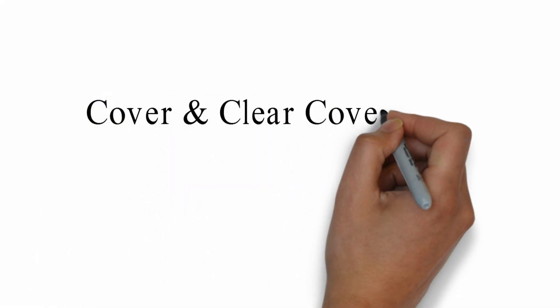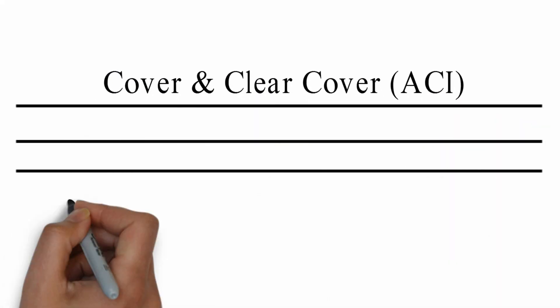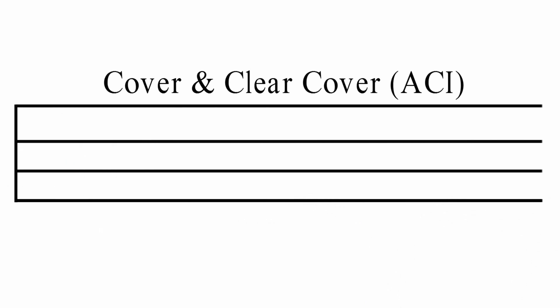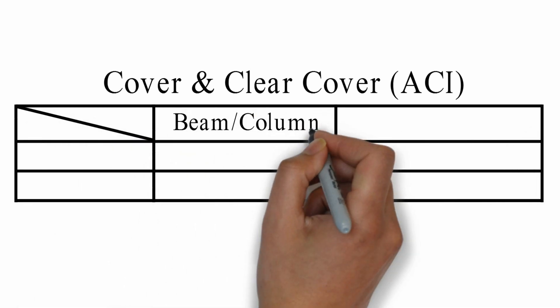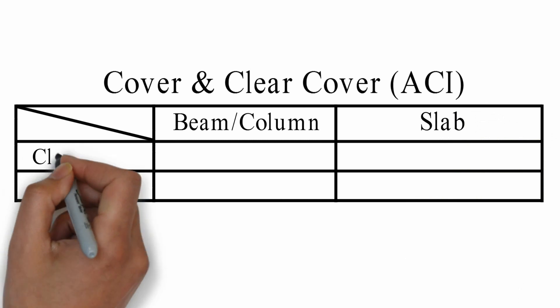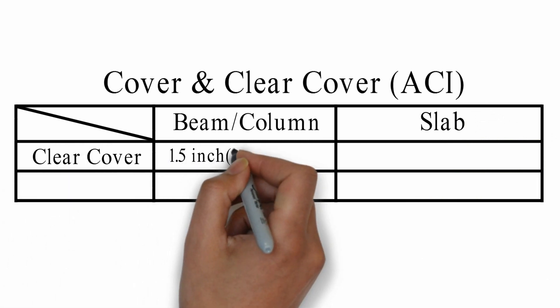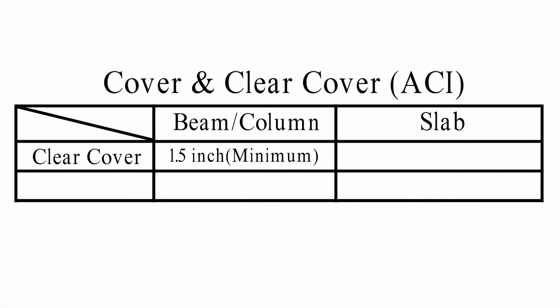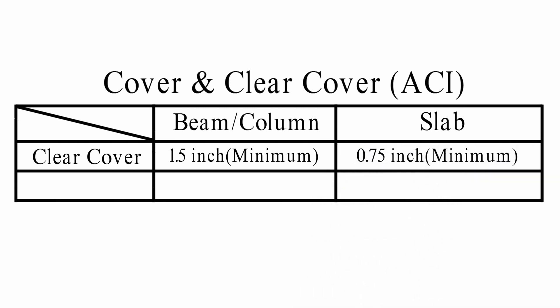Cover and clear cover according to ACI code. For beam and column, the clear cover minimum is 1.5 inch. For slab, the minimum clear cover is 0.75 inch.